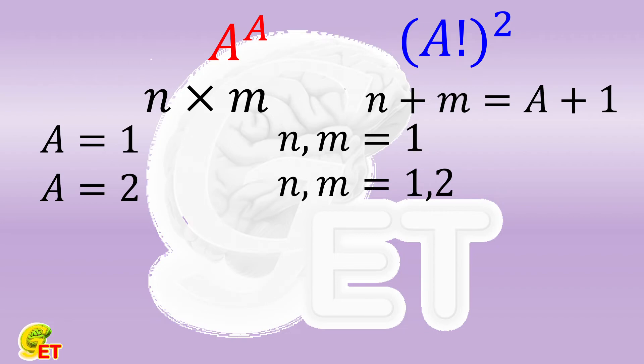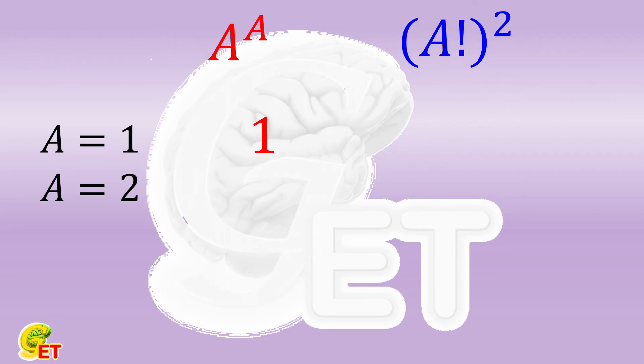Let's do the real calculation. When A is equal to 1, the left side is 1 and the right side is also 1. Equal. When A is equal to 2, the left side is 4 and the right side is also 4. Equal.